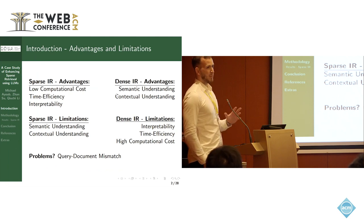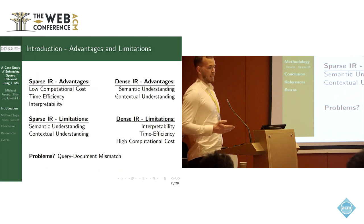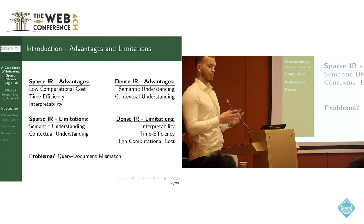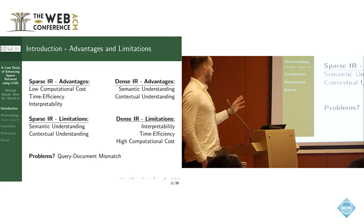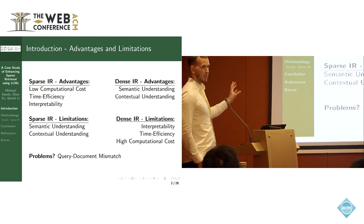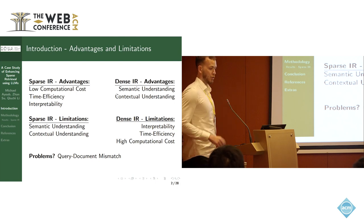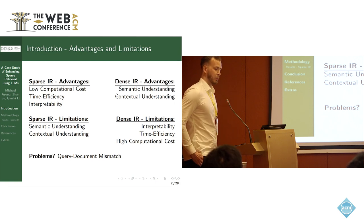Some of the limitations with sparse IR in general is that they often lack semantic understanding and also fail to have a bigger contextual understanding of terms, queries, and documents — the relation between the terms. This is an inherent problem for sparse IR, such that if the query is very short and the document is very long and there exists a vocabulary mismatch, it will be difficult to conduct effective sparse retrieval.